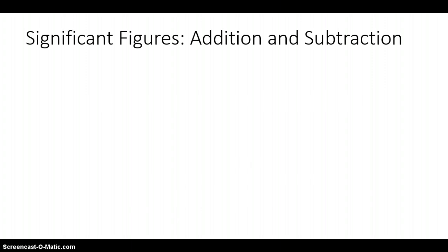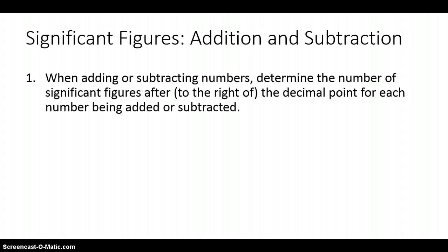When adding or subtracting different data values obtained from measurement equipment, you need to determine what the significant figures are for your final answer. The first thing you want to do is determine the number of significant figures that are to the right of the decimal point for each of the numbers that you are adding or subtracting.